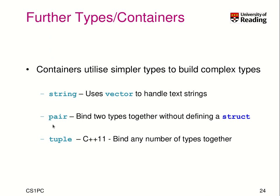In C, this was not possible without declaring a structure for such a return type, but now we can just use pair. Extending from pair, with C++11, you can use tuples that bind together any number of types. So you can have pairs — essentially tuples — of 4, 6, or 8 elements.